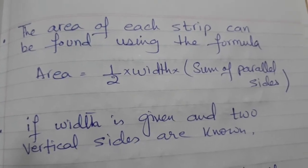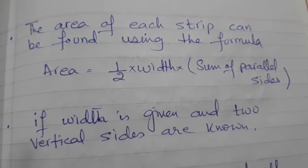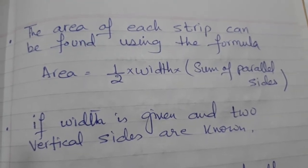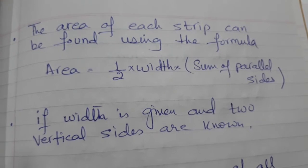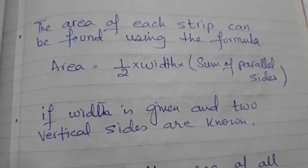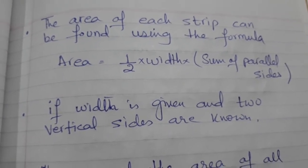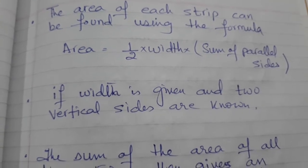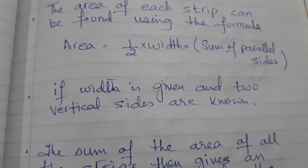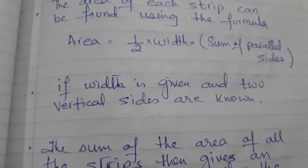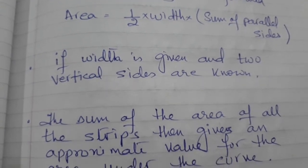Now we know that the area of a trapezium has the formula: half times width times the sum of the parallel sides. The width is actually the distance between the two parallel sides. So if we know the width and we know the length of the two parallel vertical sides, we can find out the area of a trapezium.